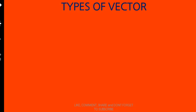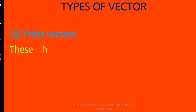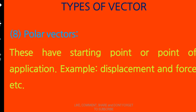The eighth type is polar vectors. In the case of polar vectors, these have a starting point or point of application. Examples are displacement and force. Any vector having a starting point or point of application is said to be a polar vector.